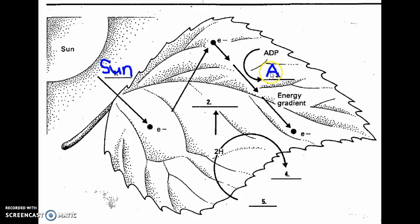Some of that energy is used to make ATP, so it converts ADP to ATP. The energy from these electrons ends up here in this ATP molecule.